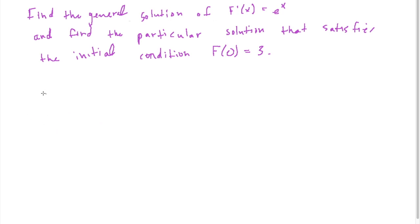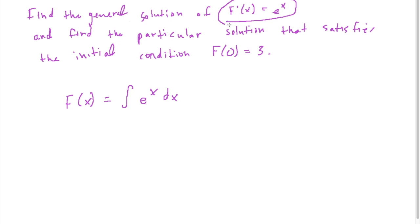First we're going to find the general solution. To find the general solution, we're just going to integrate. F(x) is equal to the antiderivative of the derivative, so the integral of e to the x dx. We know that the antiderivative of e to the x is just e to the x plus C — that constant. So this is the general solution.